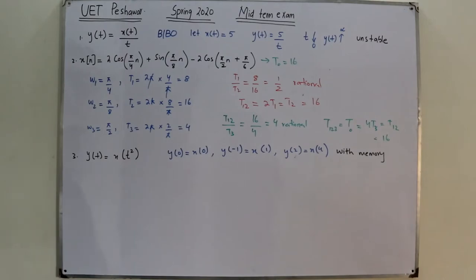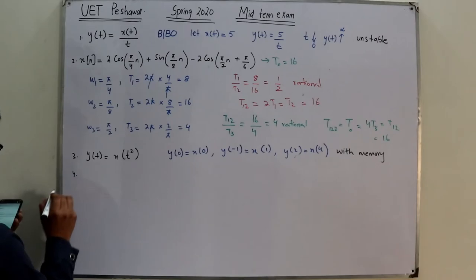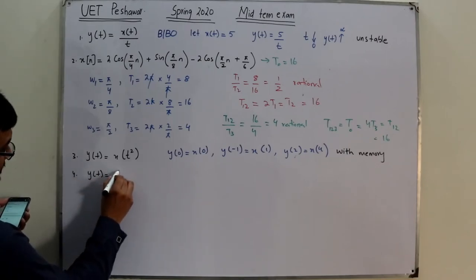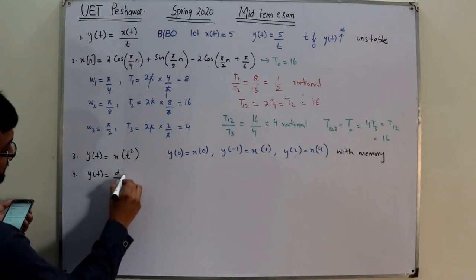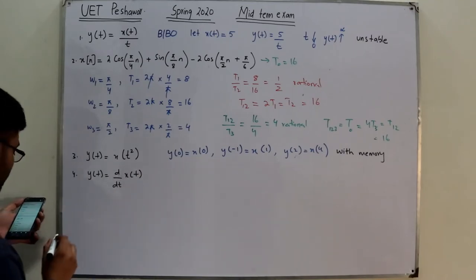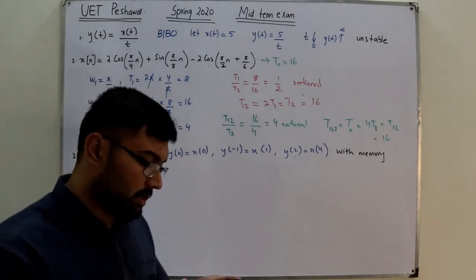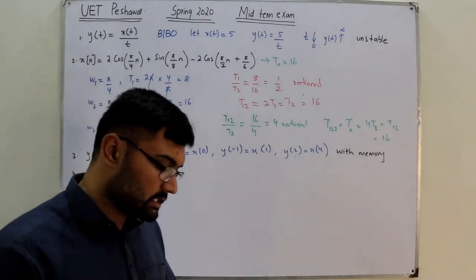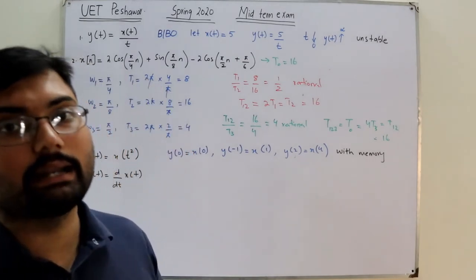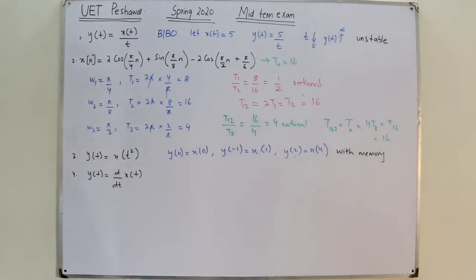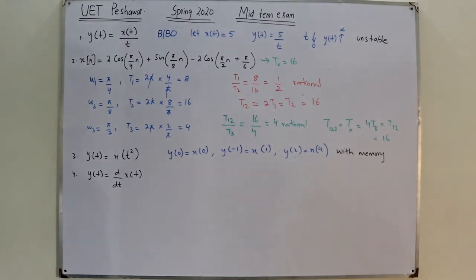Question 4: y(t) equals the derivative of x(t). We need to check all properties: linearity, time invariance, memory, causality, invertibility, and stability, one by one.